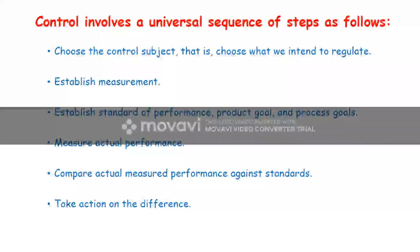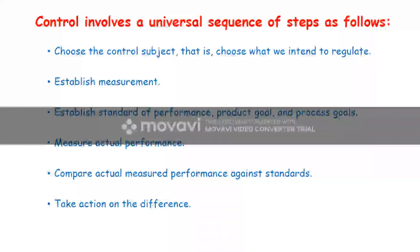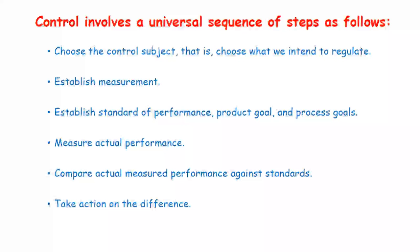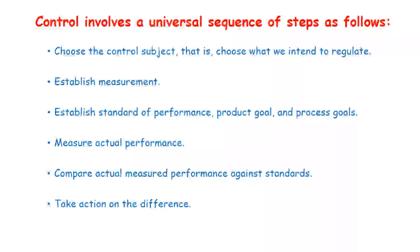Quality control involves a universal sequence of steps as follows: first is choosing the control subjects — what we intend to regulate; second is establishing measurements; third is establishing standard of performance, product goals, and process goals; fourth is measuring actual performance; fifth is comparing actual measured performance against the standards; sixth is taking action on the difference.